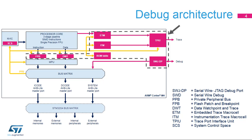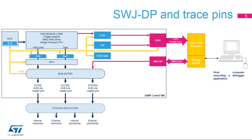The debugger can access memory-mapped resources while the processor is running. For example, a breakpoint can be set by the debugger by accessing the FPB unit connected to the private peripheral bus while the processor is executing instructions. The SWJDP enables an external debug probe to access any memory-mapped resources also accessible from the Cortex-M4 core. Note that the Memory Protection Unit, or MPU, does not intercept the requests initiated by the SWJDP.